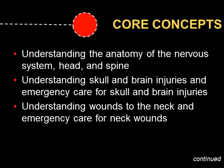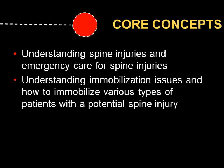The core concepts for the chapter include understanding the anatomy of the nervous system, the head, and the spine; understanding skull and brain injuries and their emergency care; understanding wounds to the neck and their care; wounds to the spine and associated care; and immobilization issues — how to mobilize various types of patients with a potential spine injury.